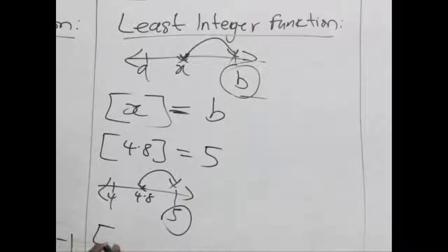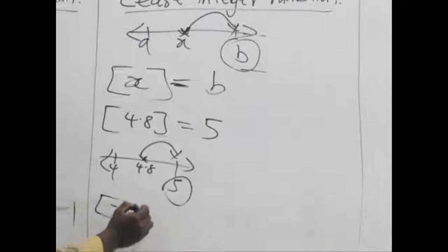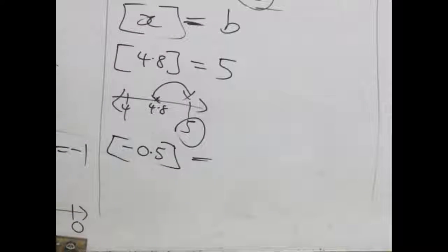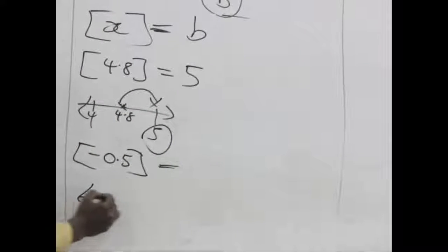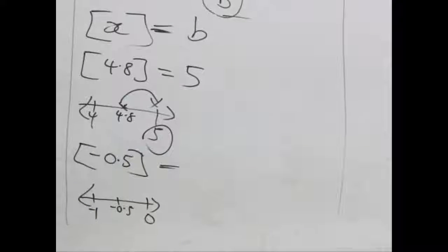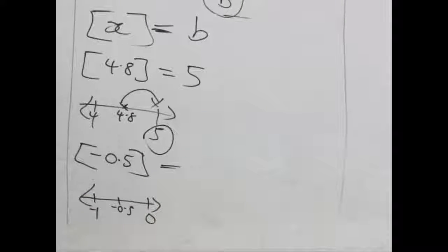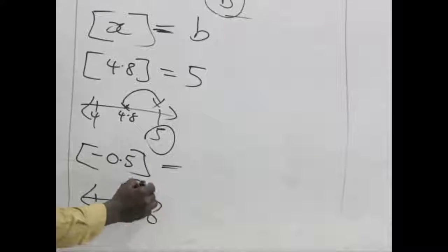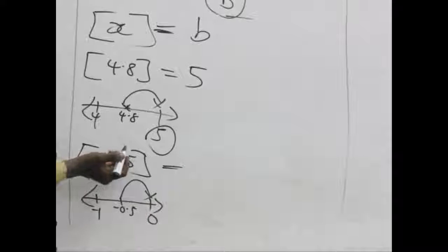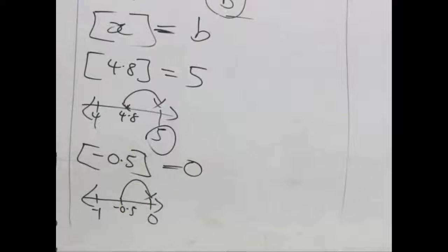Okay, also taking the least integer function for minus or negative 0.5, which is negative half. What would be our value? We can place it on the short number line. We have our negative 0.5 here. It is in between negative 1 and 0. Which of them are greater than negative 0.5? This is the greater one. So, we refer it back to 0. So, the least integer function for negative 0.5 is actually 0.